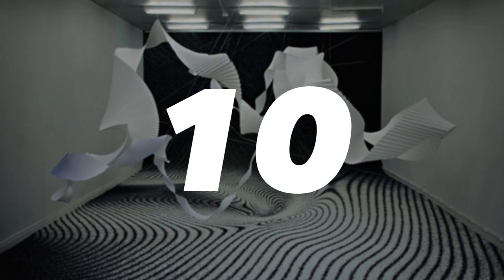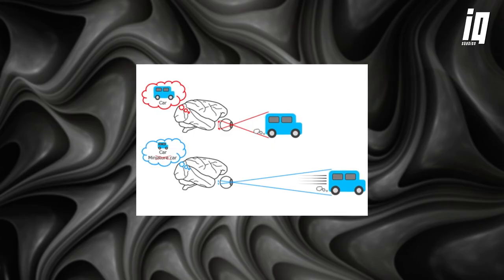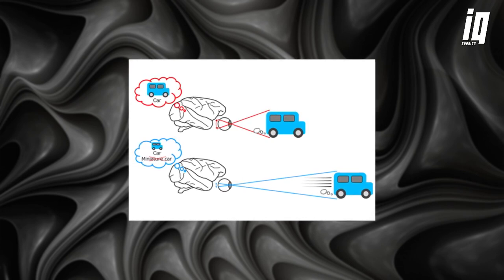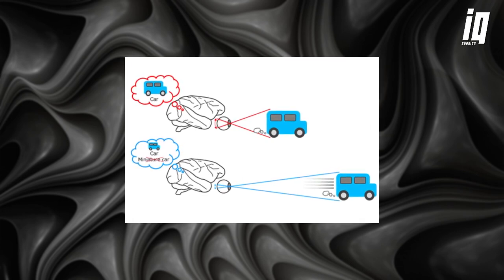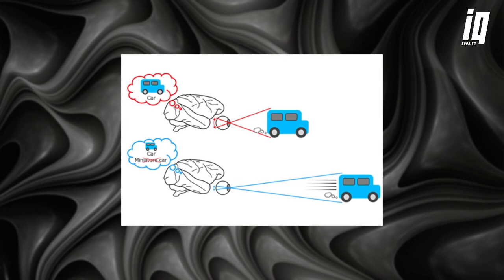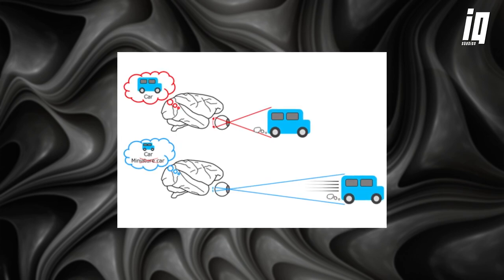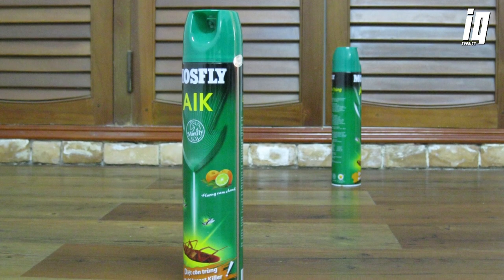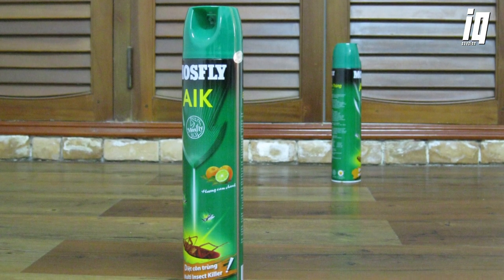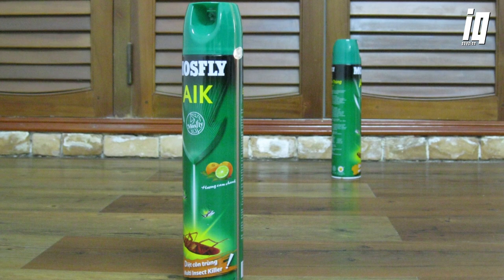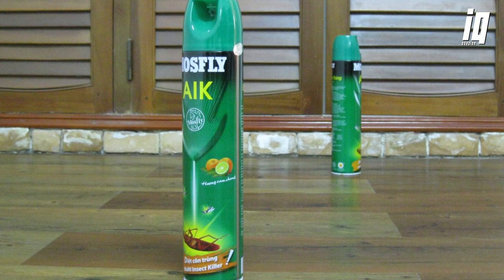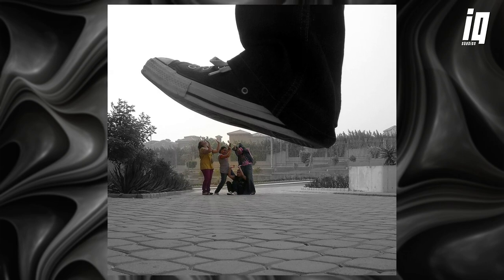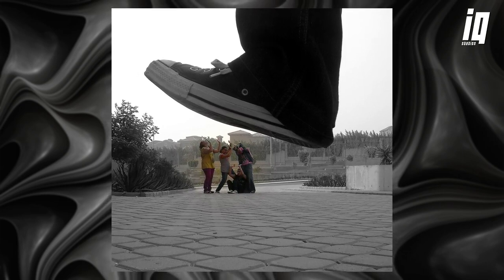Number 10: Size Constancy. Our brains have a remarkable ability to interpret the size of objects based on their distance from us. When we look at an object, our brains calculate its size and distance by using cues such as perspective, relative size, and shading. This process is called size constancy, and it allows us to perceive objects as being the same size, even if they appear smaller or larger due to their distance. However, sometimes our brains can be tricked into misinterpreting the size of objects.